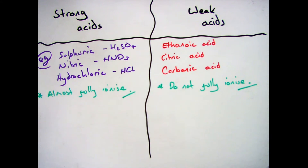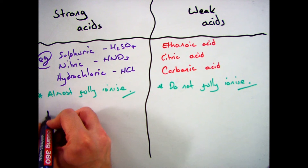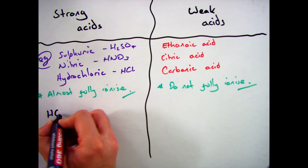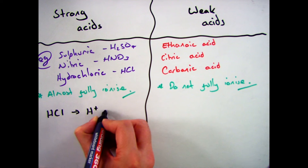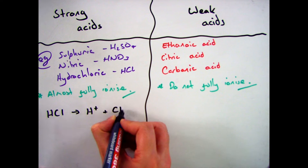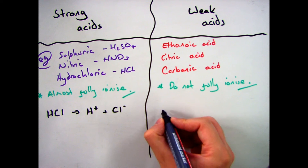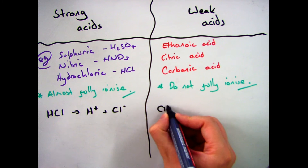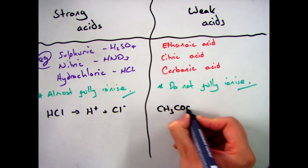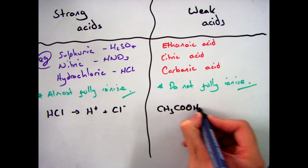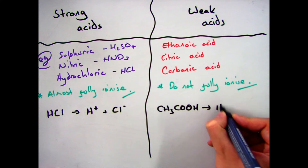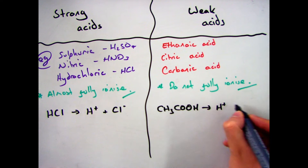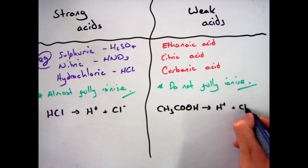In the previous video, we talked about concentration and the fact that the higher the concentration of H+ ions means you have a lower pH and a stronger acid. So if we talk about strong acids like hydrochloric acid, which fully ionise, they break down into H+ ions — there's lots of them — so it's a lot easier to have a high concentration, and therefore a lower pH.